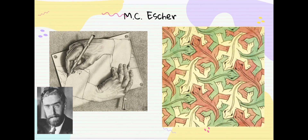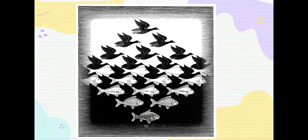MC Escher is an artist known for playing with positive and negative space and optical illusions in his famous tessellations. He mathematically created images that transform from positive to negative shapes. We see that here as the fish on the bottom gradually goes from being the positive shape to being the negative space in the background, and the bird does the same as we gaze down.